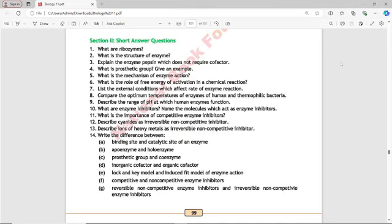First question hamare paas, what are ribozymes? The answer is, ribozymes are the enzymes which consist of RNA and are found in ribosomes. Bacchow, humnay pada tha topic chapter ke start mein, ke joh enzymes hootay na, woh mostly protein in nature hootay hain, except ribozymes. They consist of RNA instead of protein and are found in ribosomes.